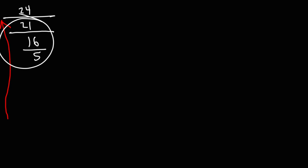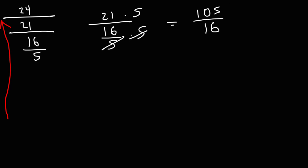Now let's introduce 21. So we have 21 over 16 over 5. So let's multiply the top and the bottom by 5. 21 times 5 is 105. And we can't really simplify 105 over 16. So we're going to leave it that way for now.